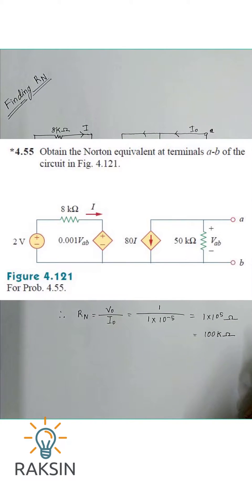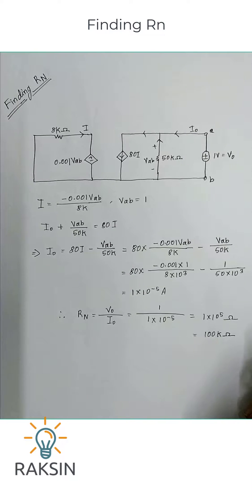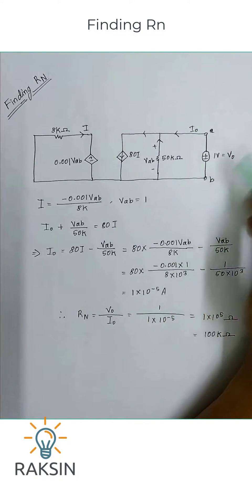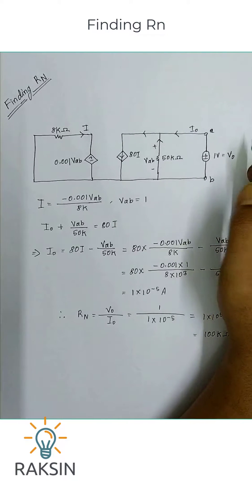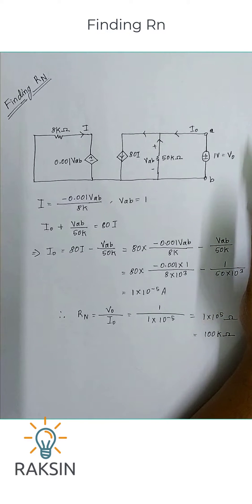This is problem 4.55. They have asked us to find out the Norton equivalent circuit at terminal A and B. First we will find out Rn. To do that, we know we have to short the voltage source and the current source will be made open.